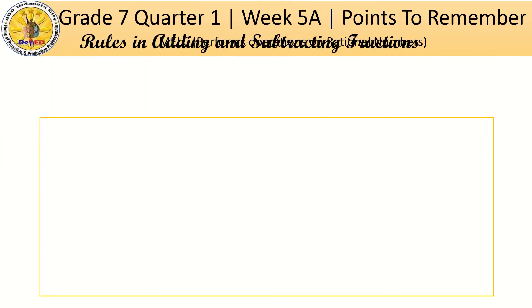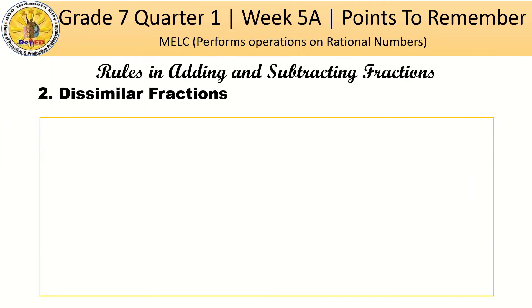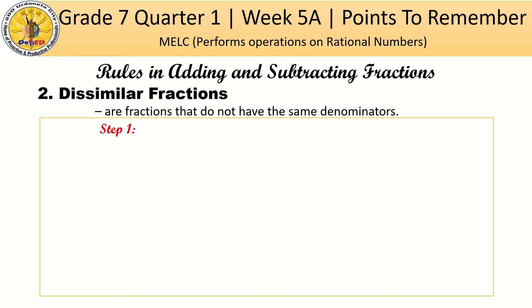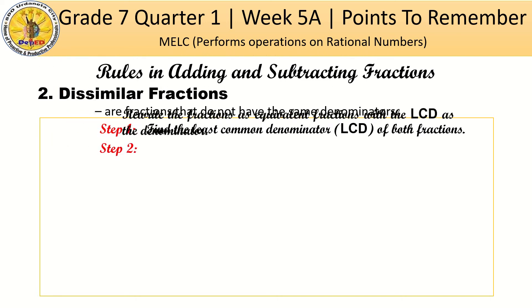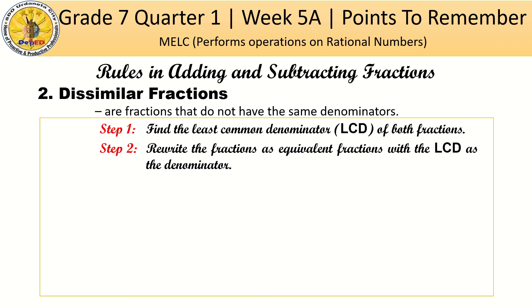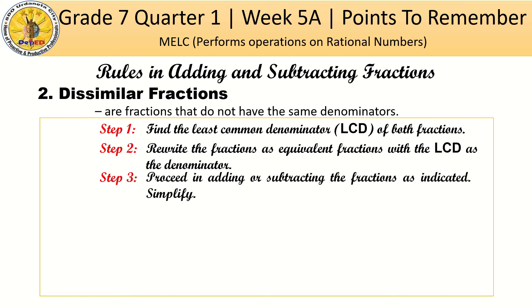How about dissimilar fractions? Dissimilar fractions are fractions that do not have the same denominators. Step 1: find the least common denominator of both fractions. Step 2: rewrite the fractions as equivalent fractions with the LCD as the denominator. Step 3: proceed in adding or subtracting the fractions as indicated and simplify.